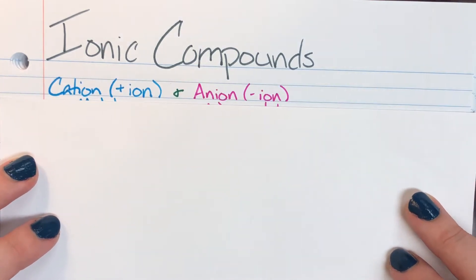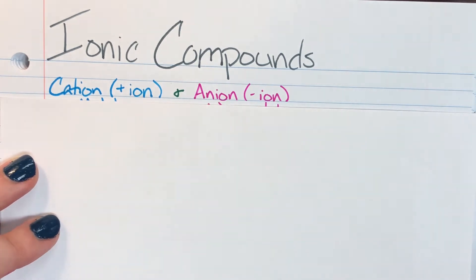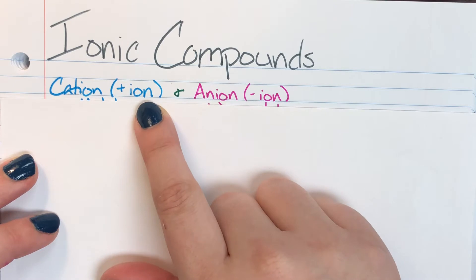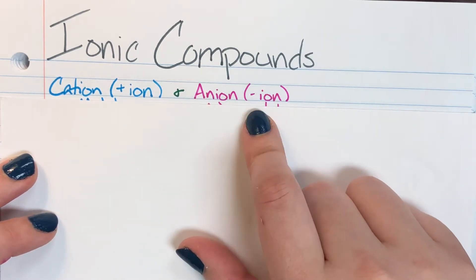So ionic compounds are going to be made up of a cation, which is our positive ion. Remember cats have paws, cations are positively charged, and an anion, which is going to be our negative ion.